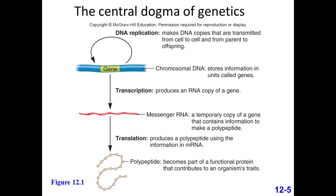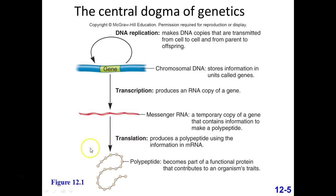Diagrammatically, we have DNA that can be replicated, but also DNA that can be transcribed into messenger RNA, which can then be translated into proteins. That is the flow of information.